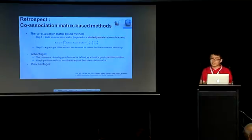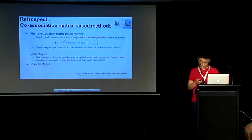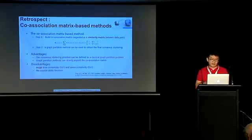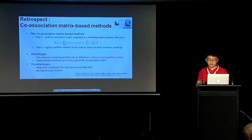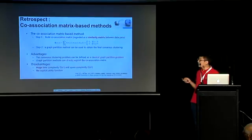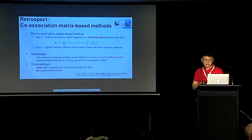Then, it has an advantage that the consensus clustering problem can be defined as a classic graph-partition problem. And so, the graph-partition method can be directly used for the co-association matrix. However, by doing so, there are also some disadvantages. For example, the method has very high time and space complexities. For example, the time complexity is big O of n cubed. And also, the co-association matrix-based method do not have explicit utility functions.